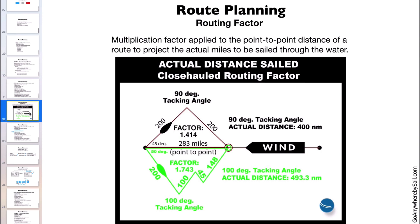Both on normal routes and in racing scenarios. Basically, a routing factor is a multiplication factor that is applied to the point-to-point distance of a route to project the actual miles to be sailed through the water. This works for close-hauled sailing.